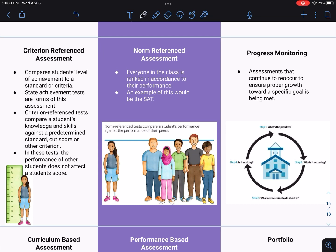Up next is the Criterion Reference Assessment. This compares a student's level of achievement to a standard or a criteria. State achievement tests are forms of this assessment. These Criterion Reference tests compare a student's knowledge and skills against a predetermined standard, essentially a cut score. And in these tests, the performance of other students does not affect a student's score. Now we have the norm-referenced assessment. Everyone in the class in this assessment is ranked according to their performance. An example of this would be an SAT. You can see here in the drawing that norm-referenced test compares a student's performance against the performance of their peers. So this girl's grades are going to be ranked among everyone else's and vice versa for each student.